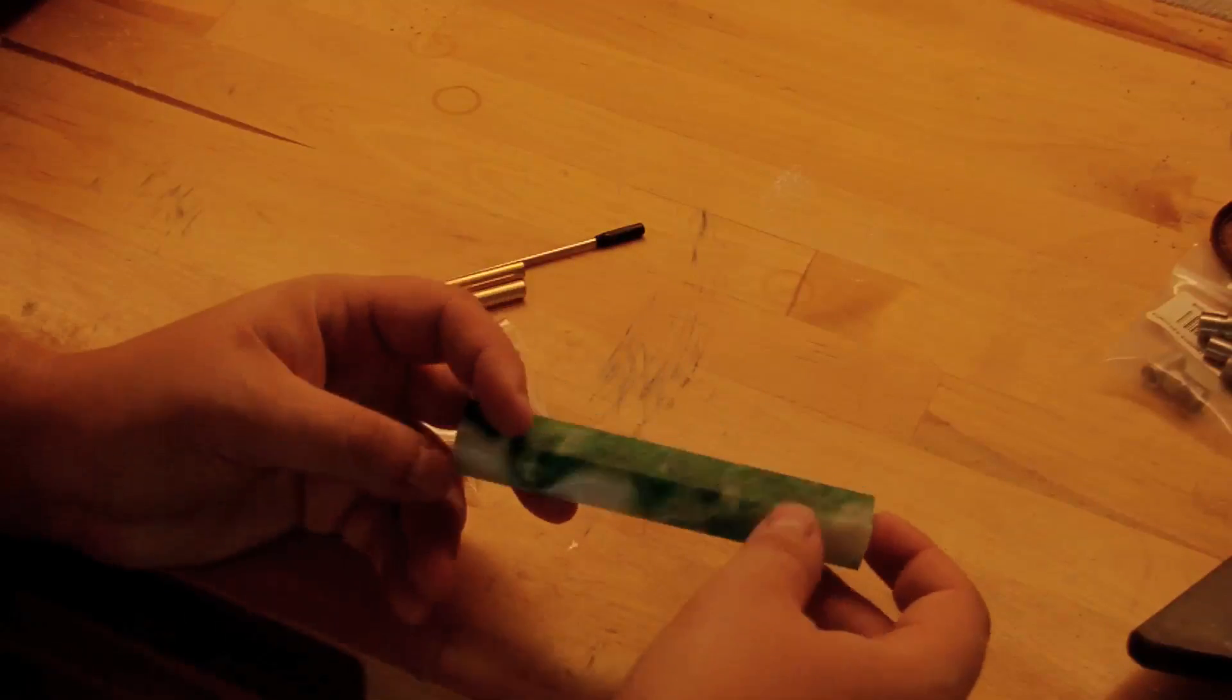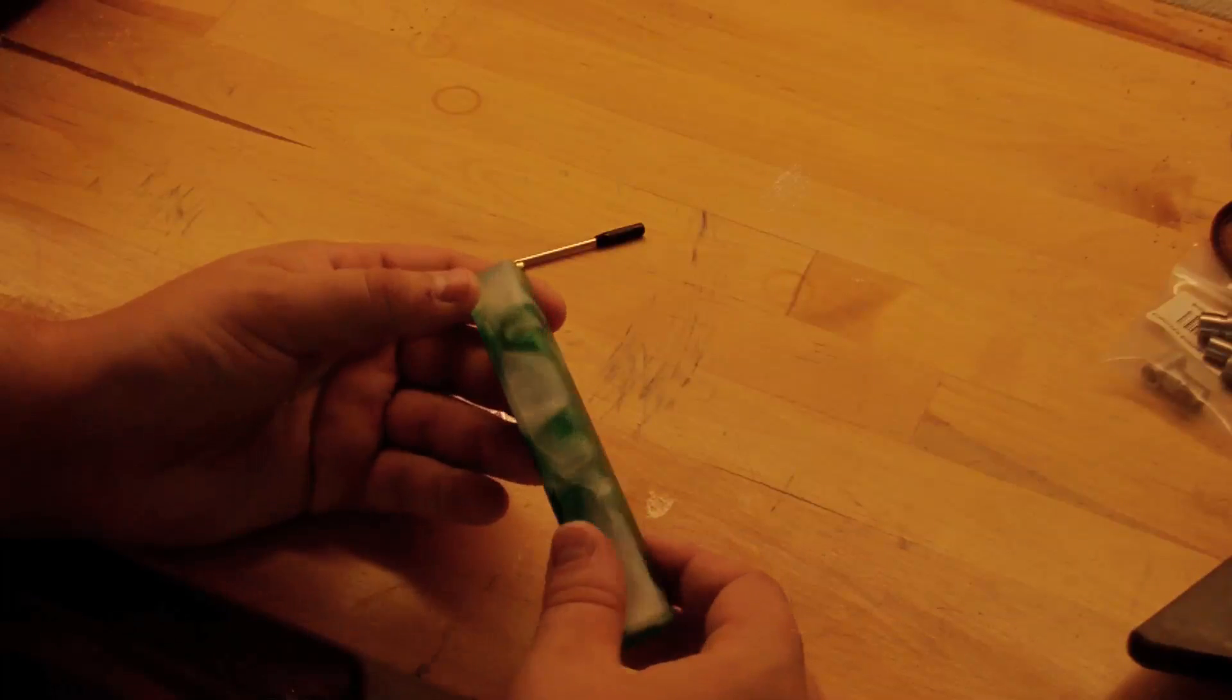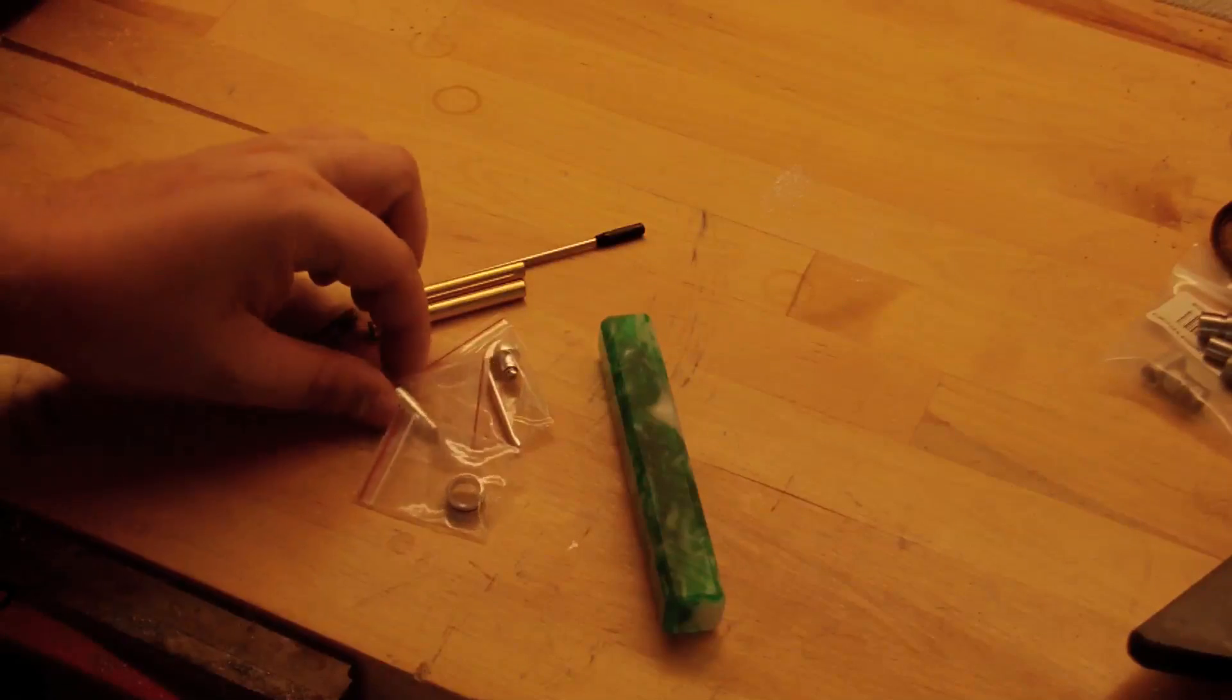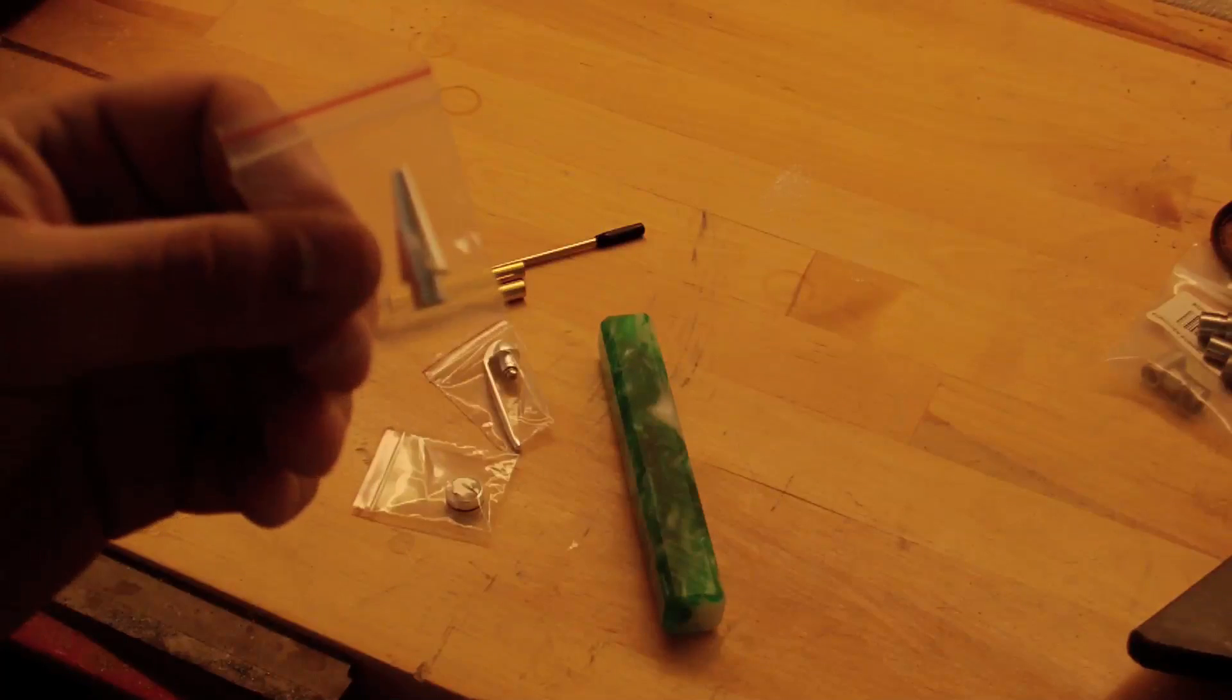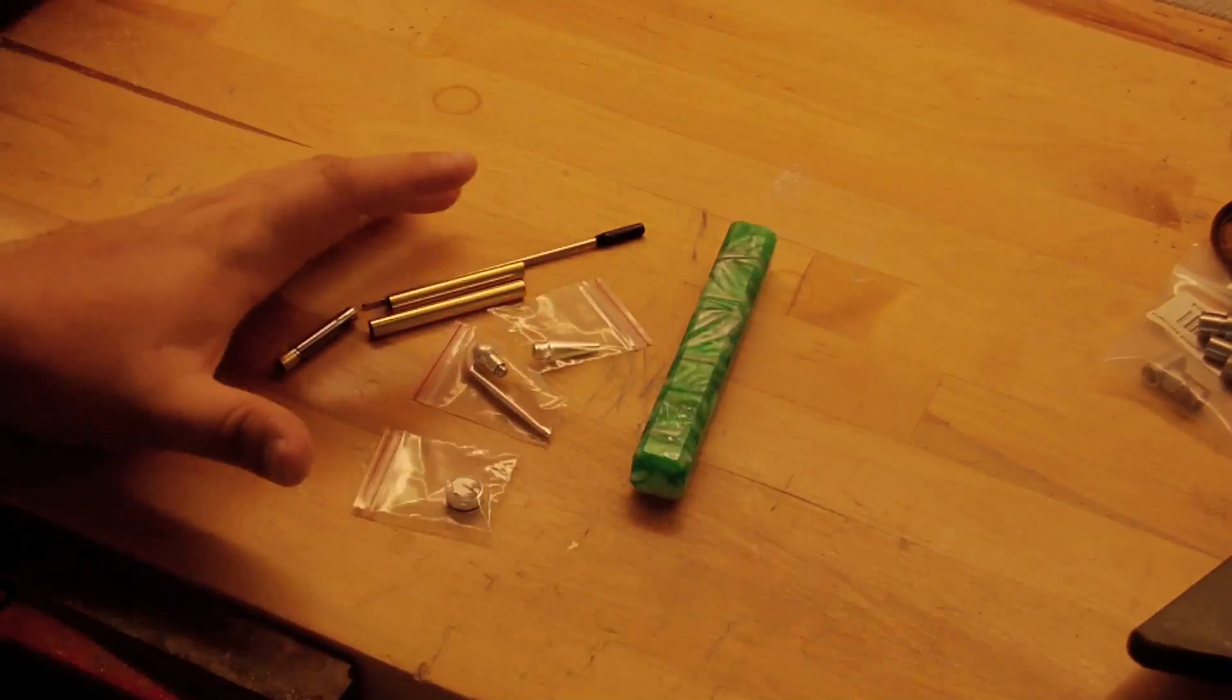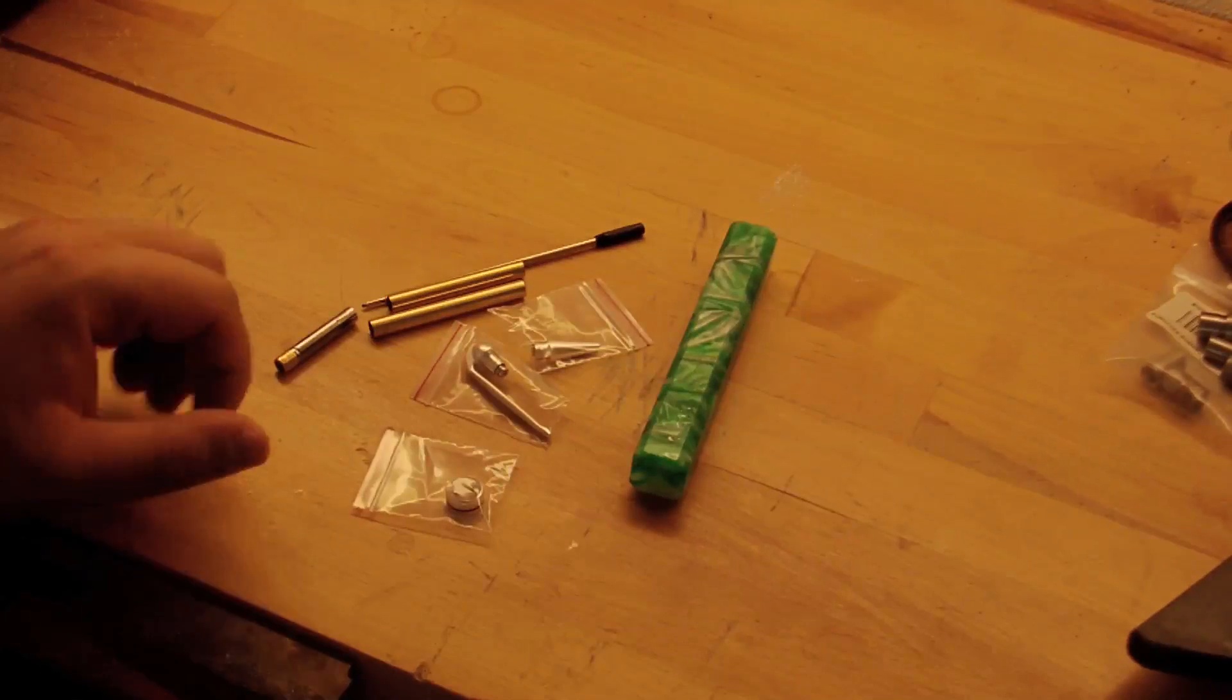Today we're going to be using an acrylic pen blank. It's a shamrock color, so it's going to be white, a little bit of pearl mixed in, and then some different shades of green. We're also going to be using a nickel pen kit, which is actually kind of the color for it. It's going to match the pearl that's inside the pen blank pretty well. So these are the materials for actually making the pen. Next we'll go ahead and start getting it going.